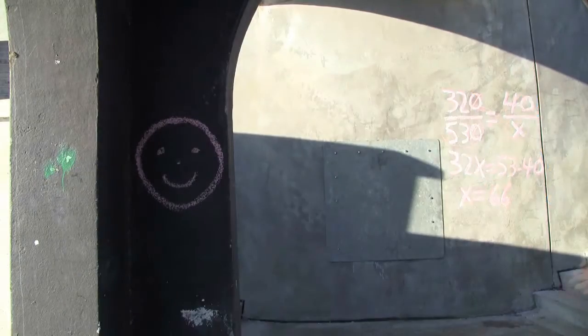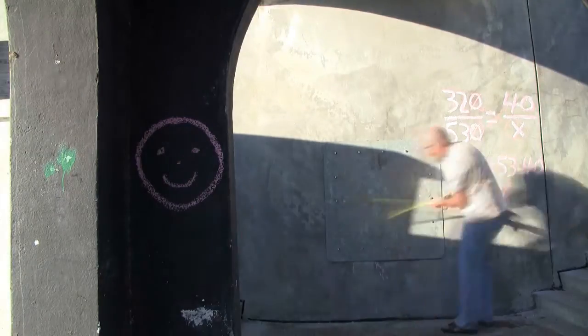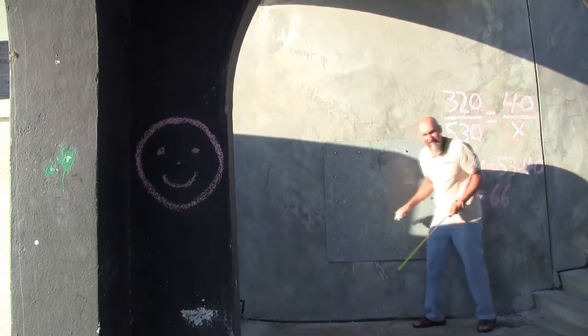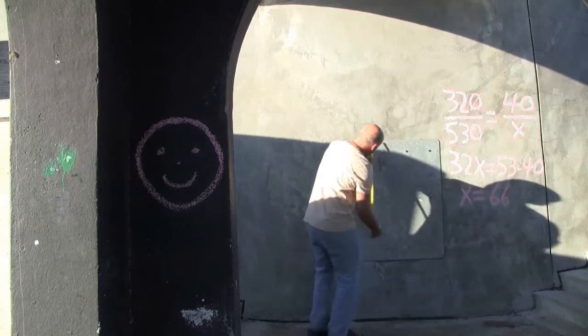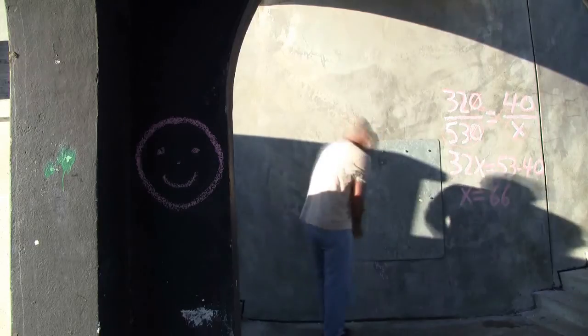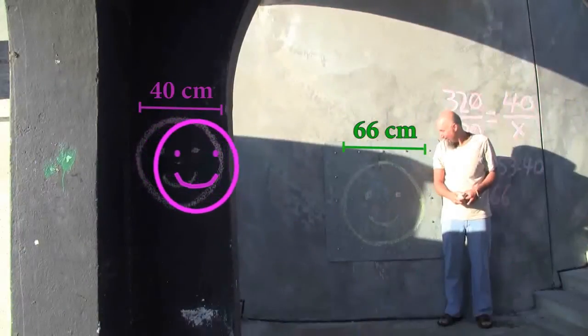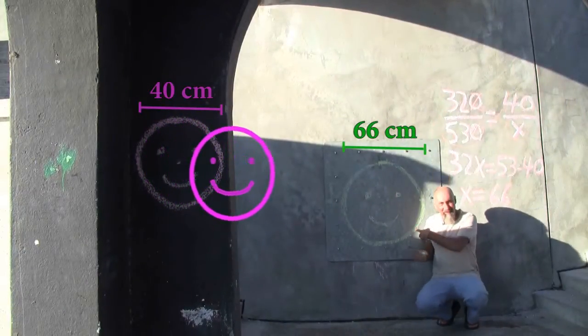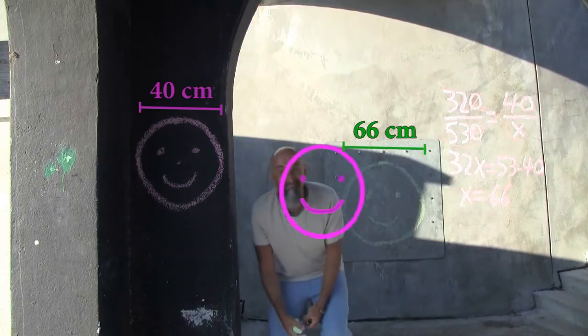So we draw the back circle with green chalk — 66 centimeters in diameter. 66 divided by 2 is 33, that's our center. This is how big the circle is compared to my head on the near wall, and this is how big the circle is on the back wall.